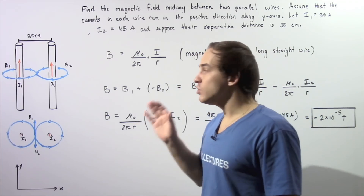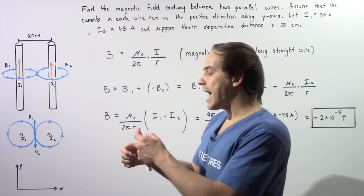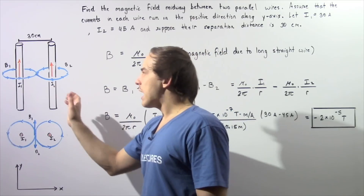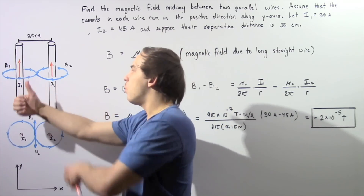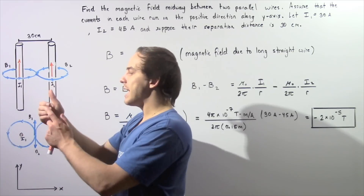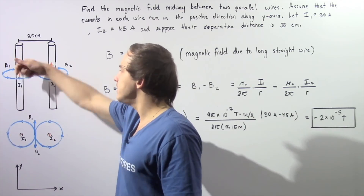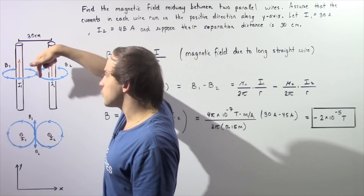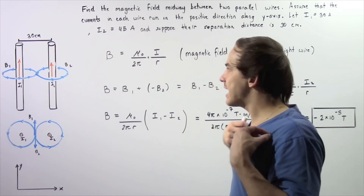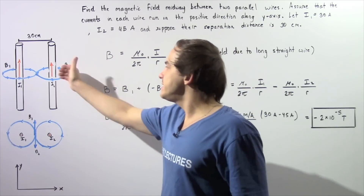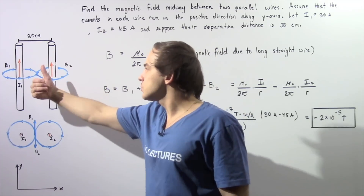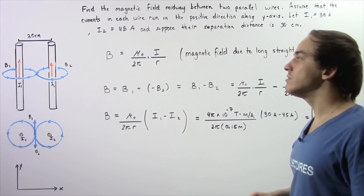We take our right hand and wrap it around the wire so that our thumb points in the same direction as the electric current. Starting with wire number 1, we wrap our hand so the extended thumb points in the positive y-axis direction. The magnetic field points in the same direction as the curling motion of the hand, meaning B1 forms a counterclockwise concentric circle around wire 1. Applying the same rule to wire 2, B2 also forms a counterclockwise concentric circle around wire 2.